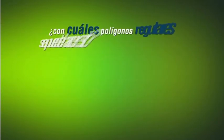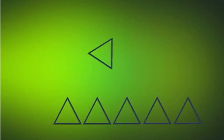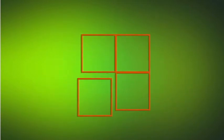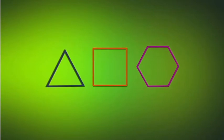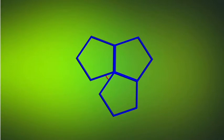Ahora bien, ¿con cuáles polígonos regulares se puede hacer esto? Se puede teselar el plano con seis triángulos equiláteros en cada vértice, cuatro cuadrados en cada vértice, o bien tres hexágonos en cada vértice. Estos tres polígonos regulares son los únicos con los que se puede hacer este tipo de teselado. Por ejemplo, si se intenta hacer esto con pentágonos, queda un ángulo de 36 grados, de tal forma que ya no se puede colocar otro pentágono a menos que se superponga, lo cual no está permitido.